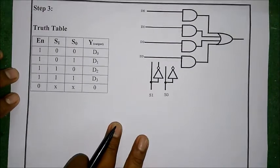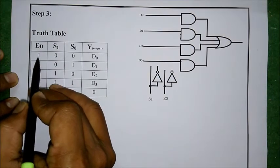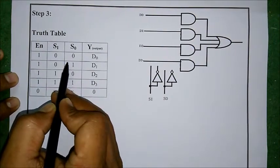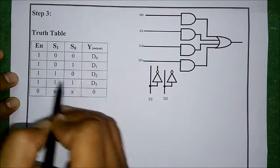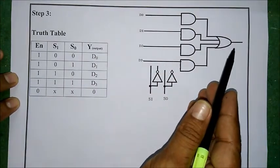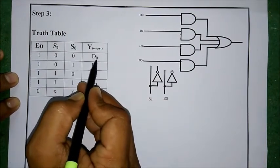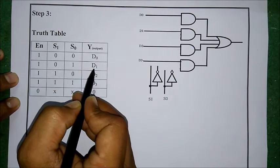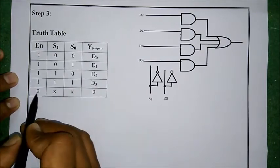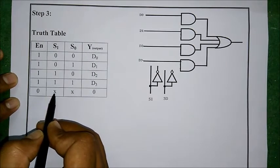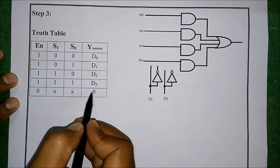With 2 select lines S0 and S1 and enable high, the four combinations are: 00 selects d0 at output; 01 selects d1; 10 selects d2; and 11 selects d3. When enable is 0, regardless of the select line combination — 00, 01, 10, or 11 — the output is always 0.